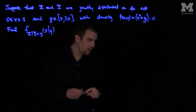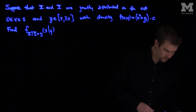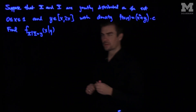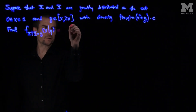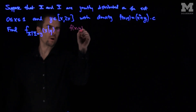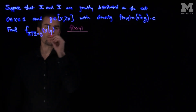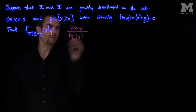We recall our formula for this conditional distribution. This will be the joint PDF of x and y over the marginal f_Y of y.